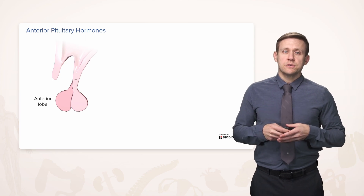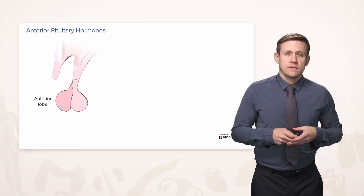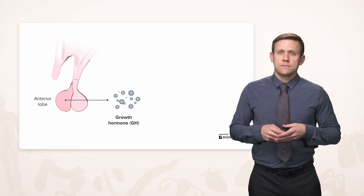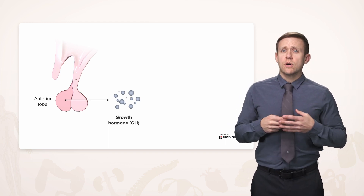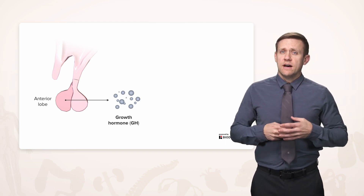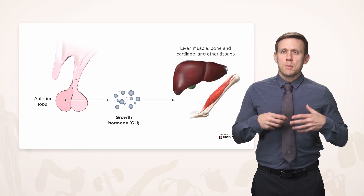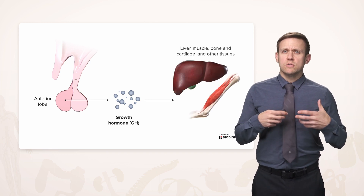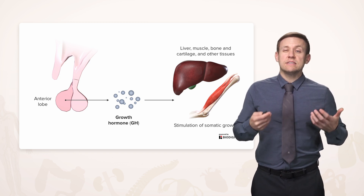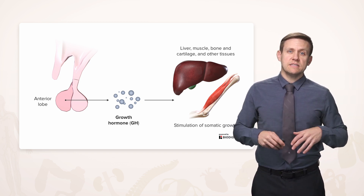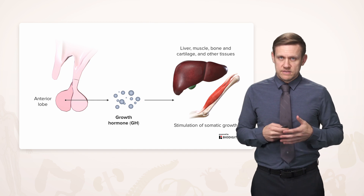The anterior pituitary hormones, such as growth hormone, have a wide effect on the body. Growth hormone affects many things: liver, muscle, bone, cartilage, and other tissues. The name gives you some general idea of what they do — they are basically promoting growth of these tissues.